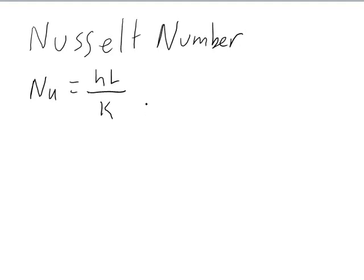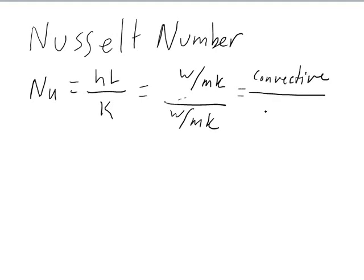And when you're working with a solid material, you can usually know what your L and your K is, and you're looking for your H. This has units of watts per meter Kelvin, and it's divided by watts per meter Kelvin, so it is unitless, and this is your convective in the numerator and your conductive heat transfer in the denominator.